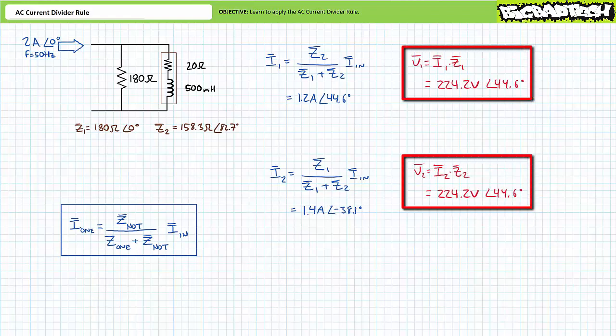As a means of numerically checking our work, an Ohm's law manipulation for either one of the current values obtained using the AC current divider rule and solving for voltage across this parallel combination yields 224.2 volts at an angle of 44.6 degrees, confirming the most fundamental property of parallel AC circuits: voltage across elements in parallel is the same.